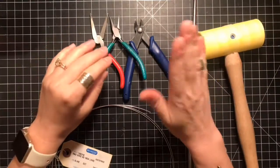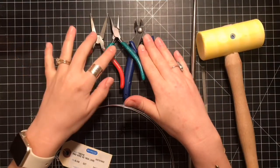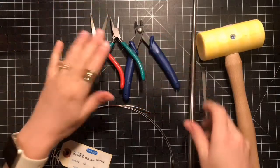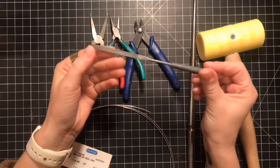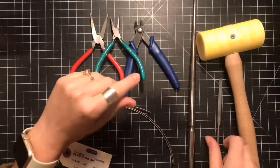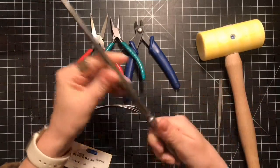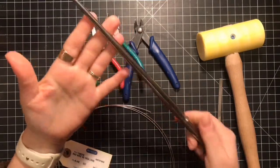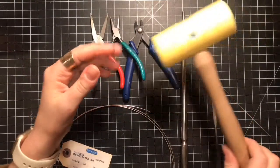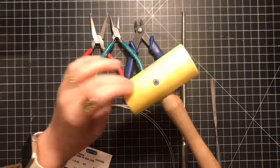We also have cutters, two pairs of smooth jaw pliers, a needle nose file, a bezel mandrel which I found on eBay for maybe fifteen dollars, and a hammer. I'm using a nylon one here.